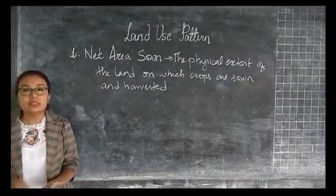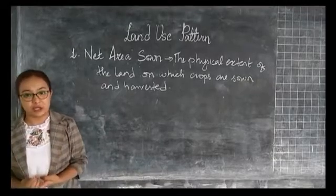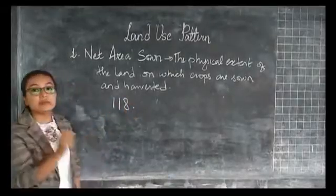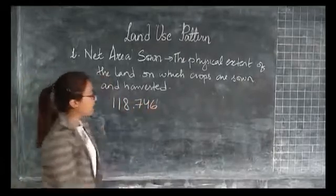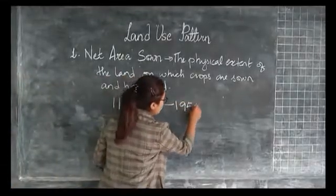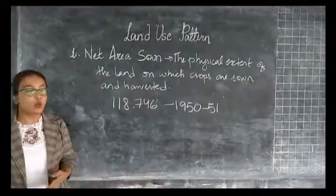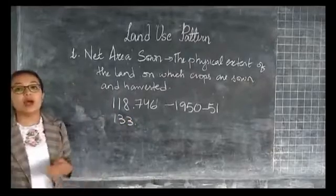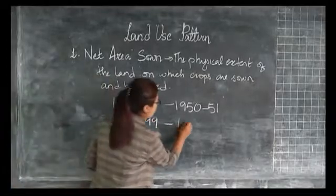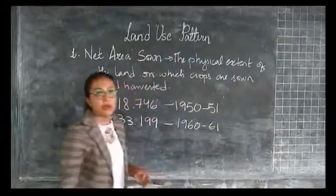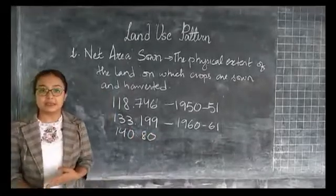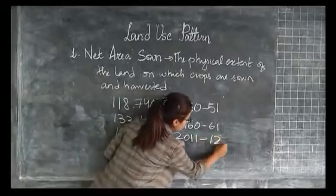This is due to natural limitations such as topography, soil, climate, etc. The net area sown has increased from 118.746 million hectares in 1950-51, to 133.199 million hectares in 1960-61, and further to 140.80 million hectares in 2011-12.